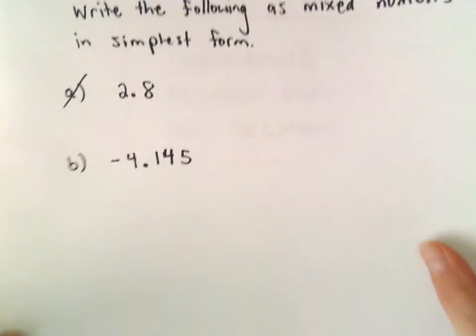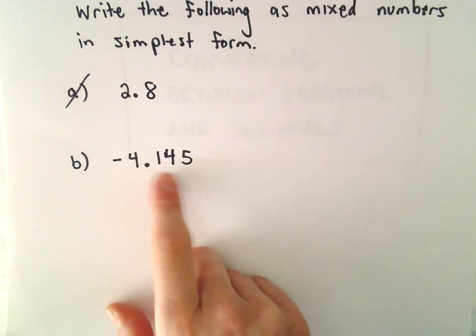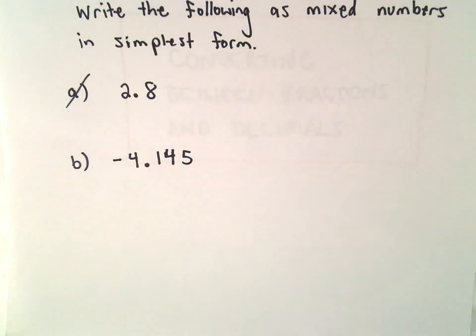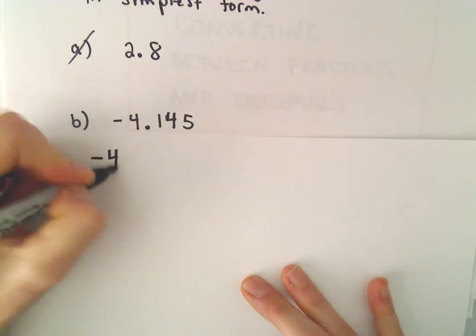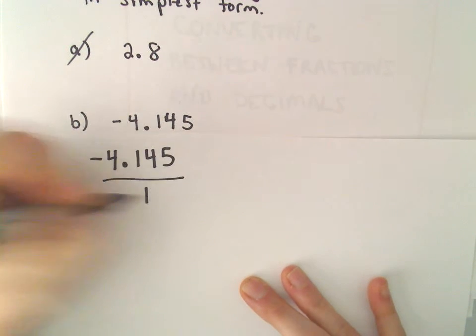Alright, so another example here of writing a decimal, negative 4.145, we're going to write that as a mixed number in simplest or the most reduced form. This one will be a little bit more obnoxious just simply because there are more digits after the decimal place.